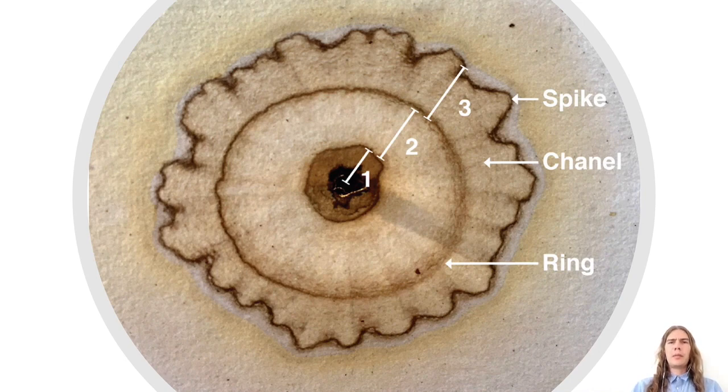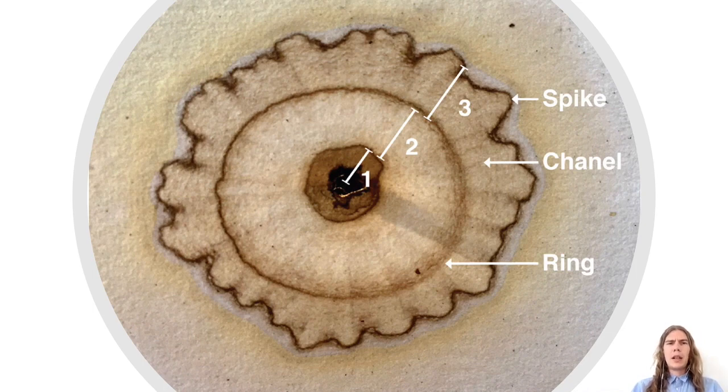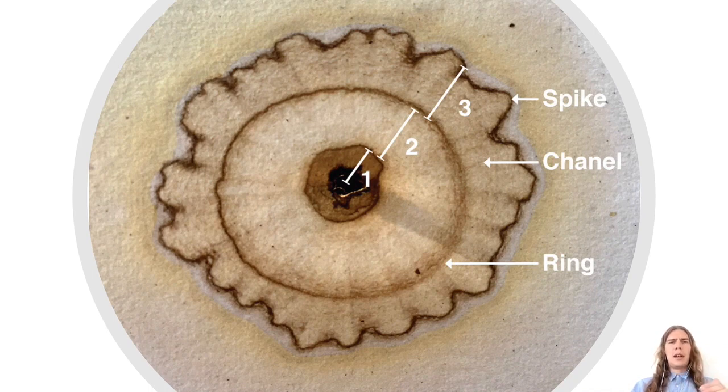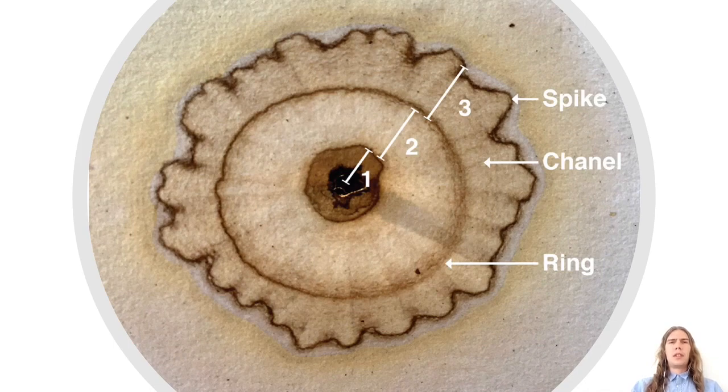You can also interpret the chromatogram in terms of its spikes and channels. Spikes are the variations in the outer border. The more spikes, the more different material in the chromatograms. Channels are the radial lines. If channels are present, the chromatogram is said to be more nutritious.